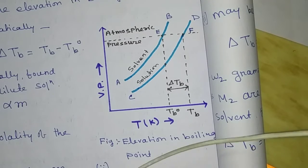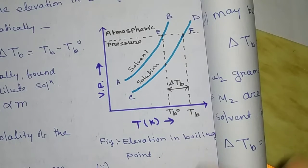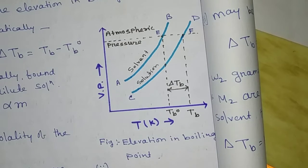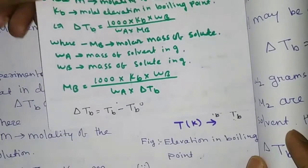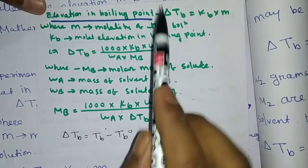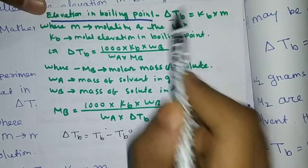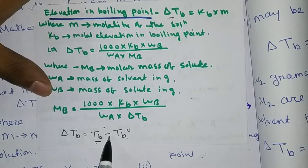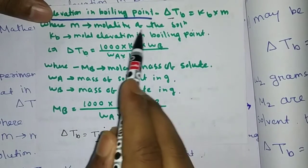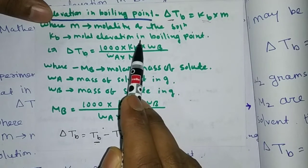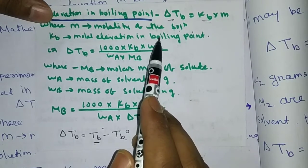Hello, I am an educator in the UK. In this session, we will discuss a problem with its solution. ΔTb is K_B into m. ΔTb is the elevation of the boiling point, which is Tb minus Tb-not. Tb is the boiling point of the solution minus the boiling point of the pure solvent. M is the molality of the solution and K_B is the molal elevation constant of the solvent.